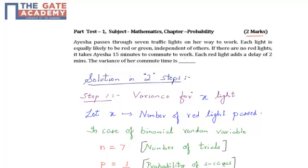Step 1: Let X be the number of red lights passed through. In case of binomial random variable, n would be equal to 7, that is the total number of trials, since we are given that there are seven traffic lights.